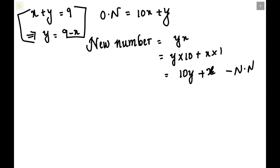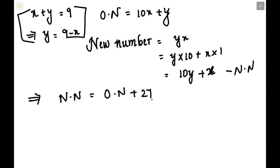The next condition states that the new number equals the original number plus 27. From the question we understand that if you interchange the two digits, the resulting number is greater than the original number by 27. So: new number equals original number plus 27. We know what the new number is and what the original number is, so let us substitute.